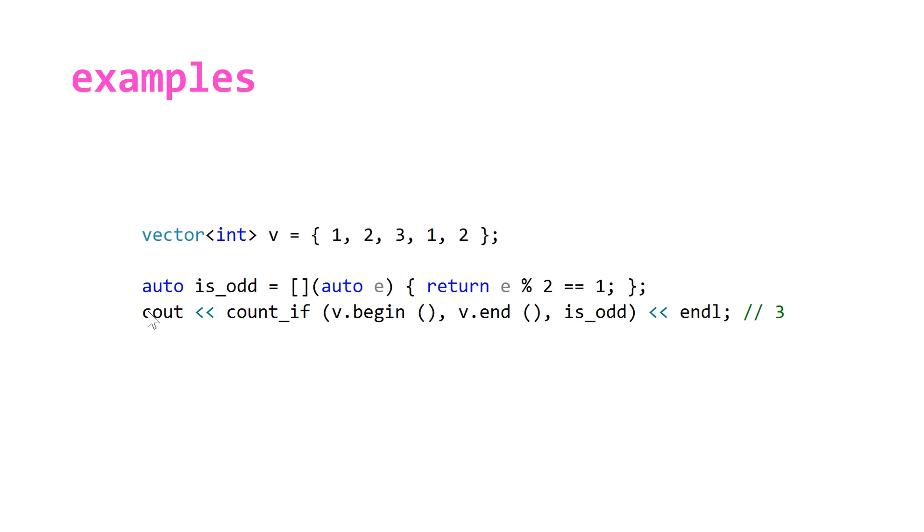When you name that via a lambda and then pass that in using the count_if function it's extremely clear that you're just counting something. As Sean Parent always says know your algorithms and even if it's a simple one like count_if it can make your code a lot more readable in terms of when logic is getting a little bit more complicated. You'll still always be able to identify that you're counting the number of elements in a data structure.